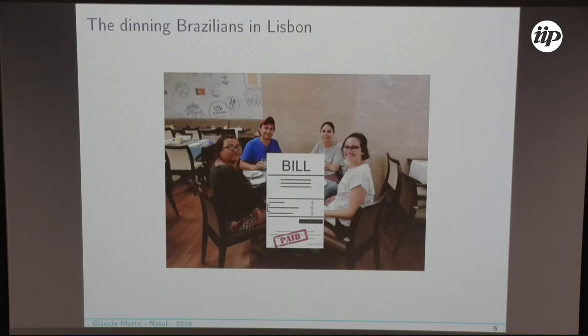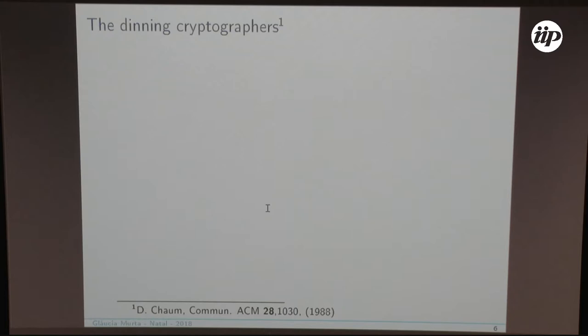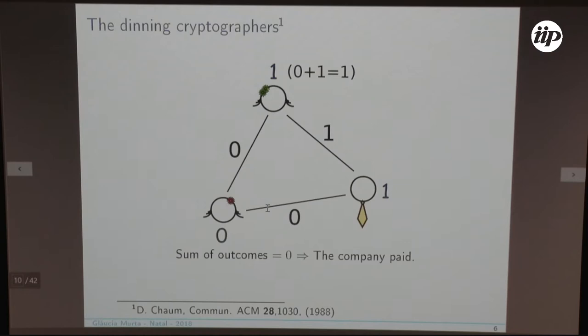This problem was actually introduced by Chaum in 1988, and it's called the Dining Cryptographers problem. The cryptographers were having dinner and wanted to decide whether the company paid for dinner or one of them did. Since they are cryptographers, they wanted to do it in a clever way. He introduced a protocol to solve this: each pair of parties shares a secret bit.